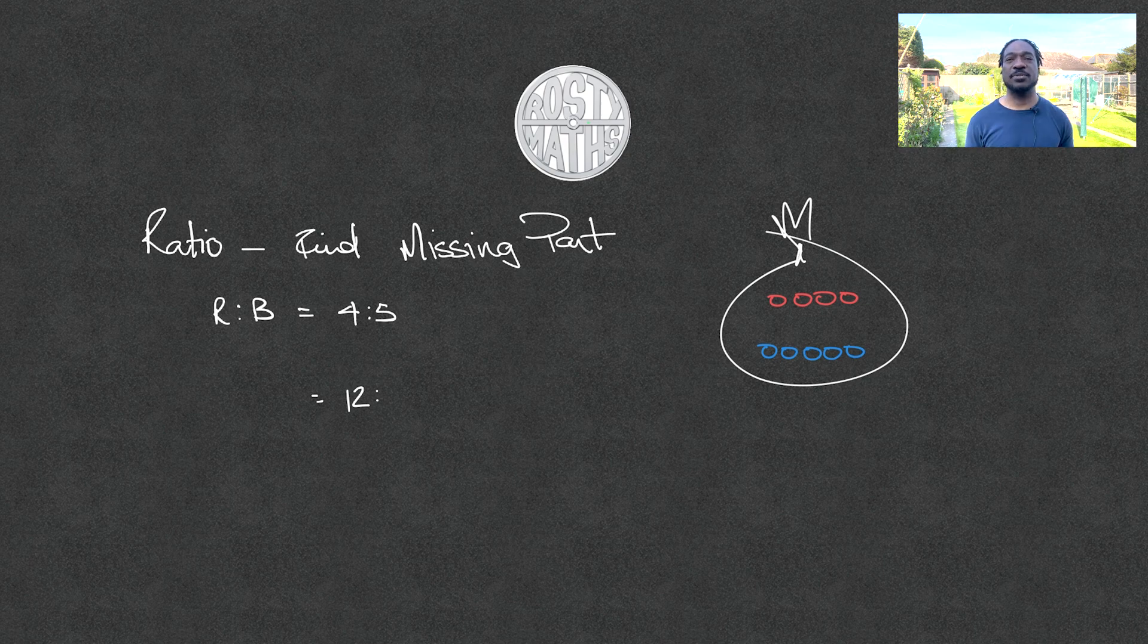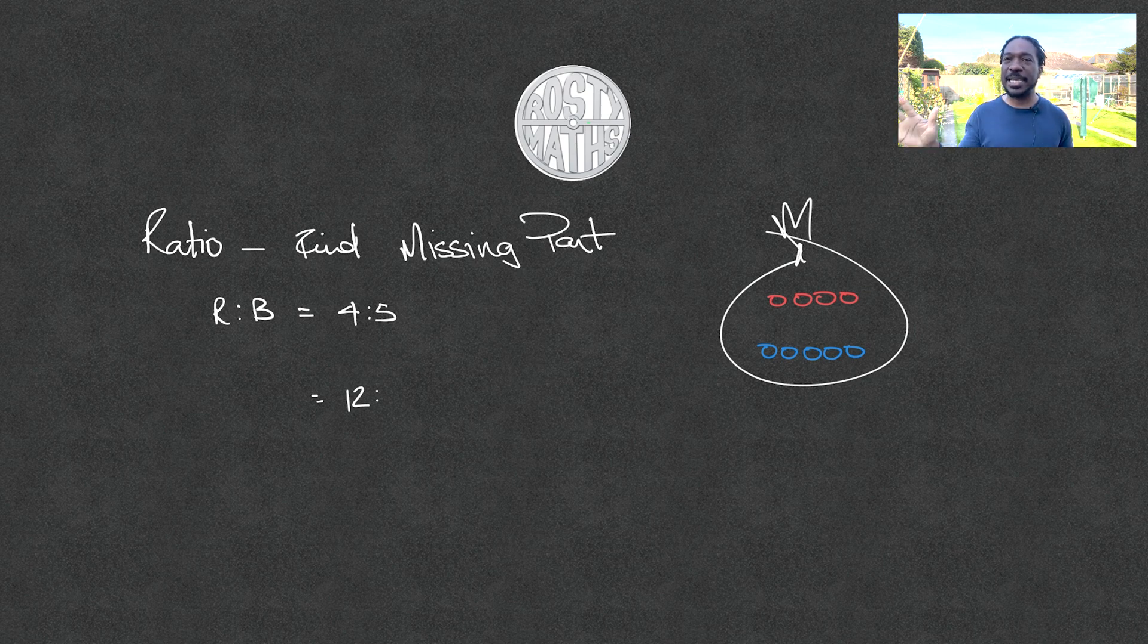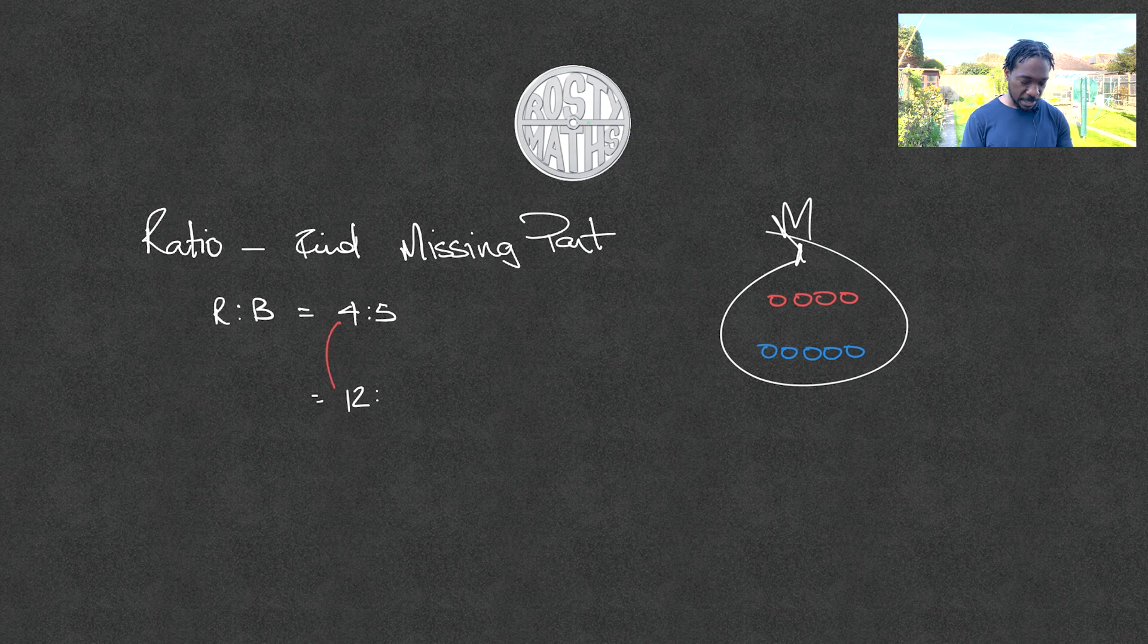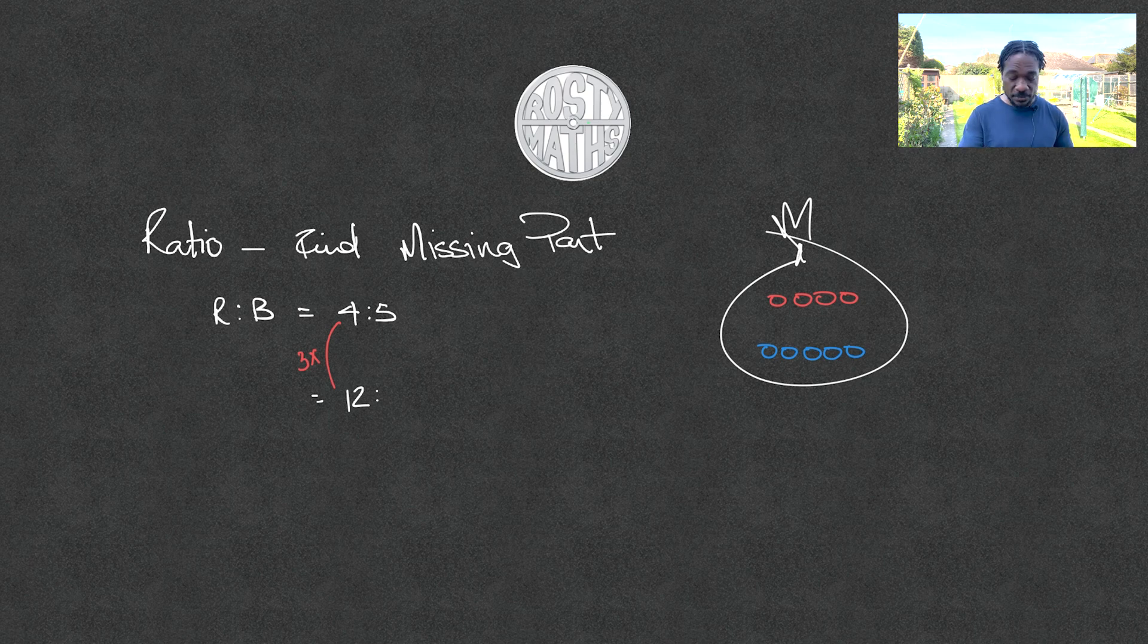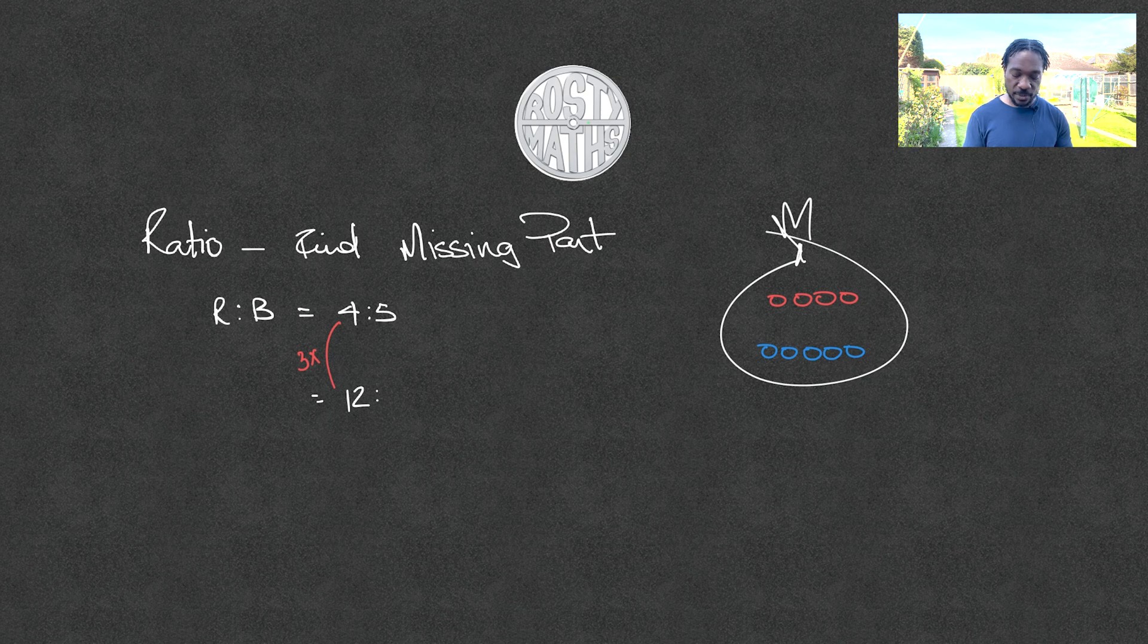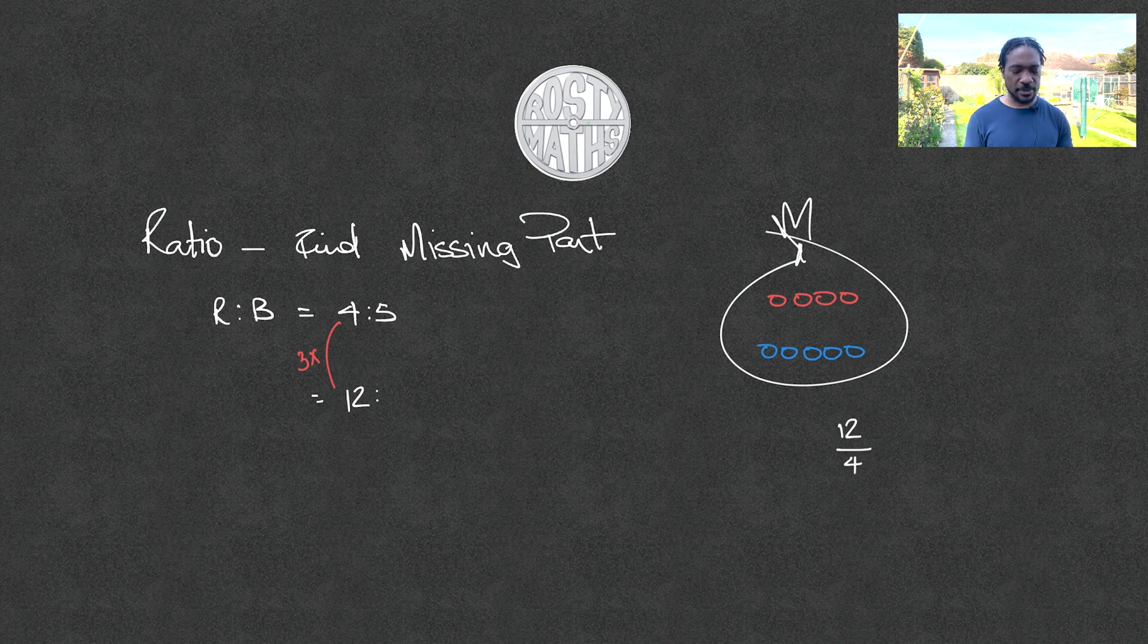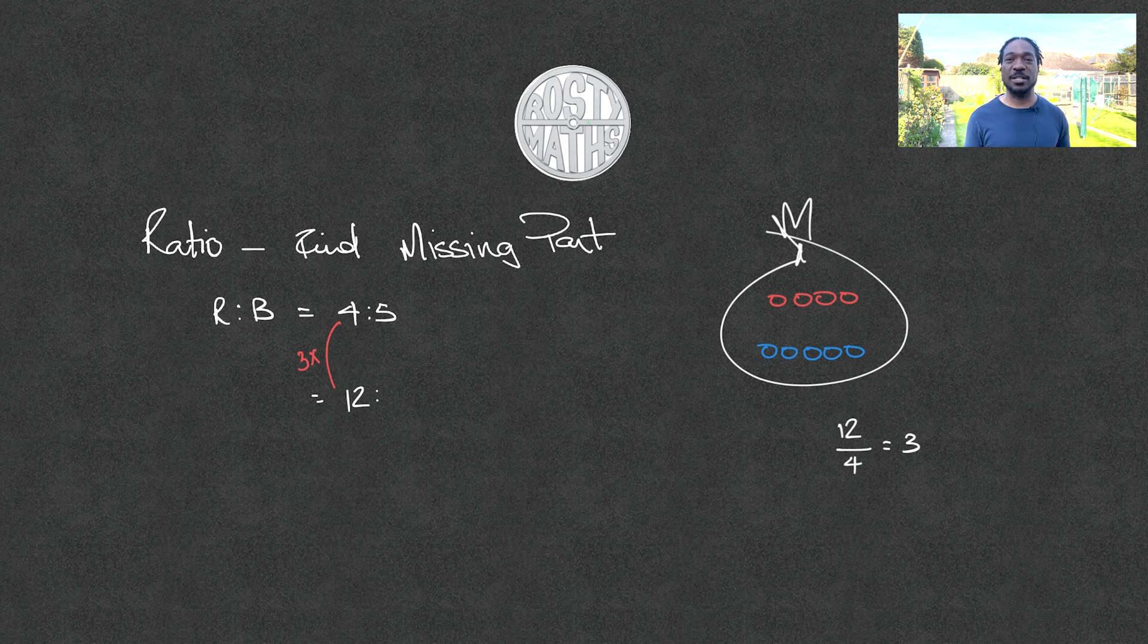The first thing that you need to do is work out how did four become twelve. How was it incremented? The way it was incremented is by multiplying by three. Now, I know that because I know my times table. What if you didn't know your times table? Then what you would have done is you would have said, well, I've got twelve now and I was supposed to have four, so I will divide it. And you'll work out that it was multiplied by three in order to make it twelve.